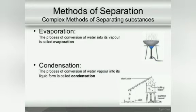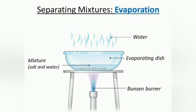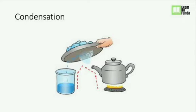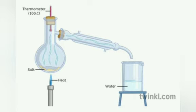Another method of separation is evaporation and condensation. Evaporation is when water gets evaporated leaving behind whatever residues or sediments are there. The best example is how salt is obtained — sea water is allowed to evaporate and you get salt. Then we have condensation, where the vapor is allowed to cool down. For example, if you have salt water and allow it to evaporate and then cool down, the salt gets deposited and you get the water out of it.